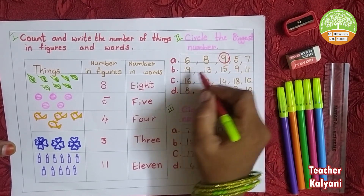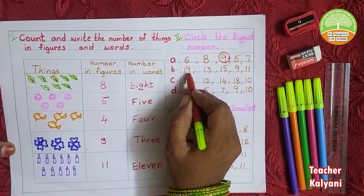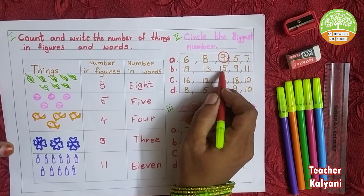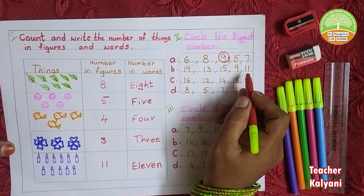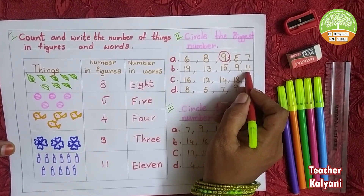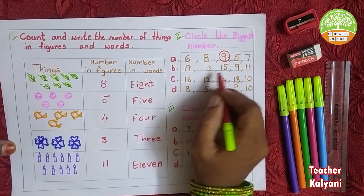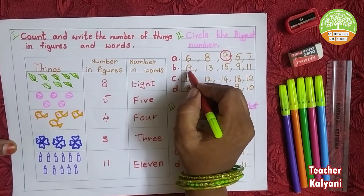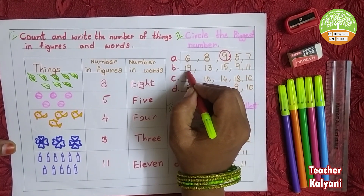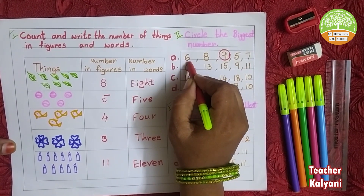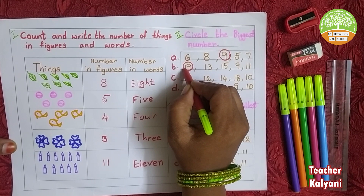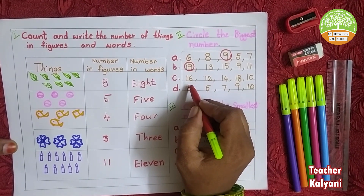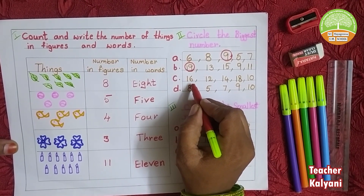Next one: 19, 13, 15, 9, 11. Which is the biggest number in this box? 19. We circle the 19.